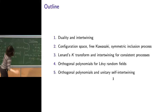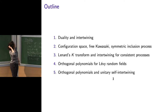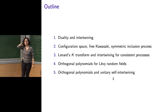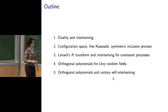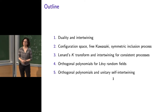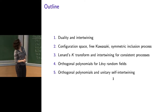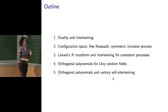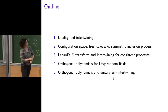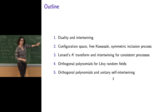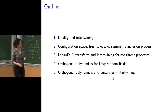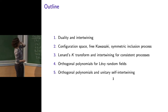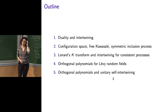To settle notation: I will say what is the configuration space I'm interested in, and remind you of two Markov processes that fit into the class of examples I'm looking at — free Kawasaki and the symmetric inclusion process. Then I will formulate two intertwining relations: one related to the Lenard K-transform, and the other aimed at an intertwiner that is unitary and defined with orthogonal polynomials.